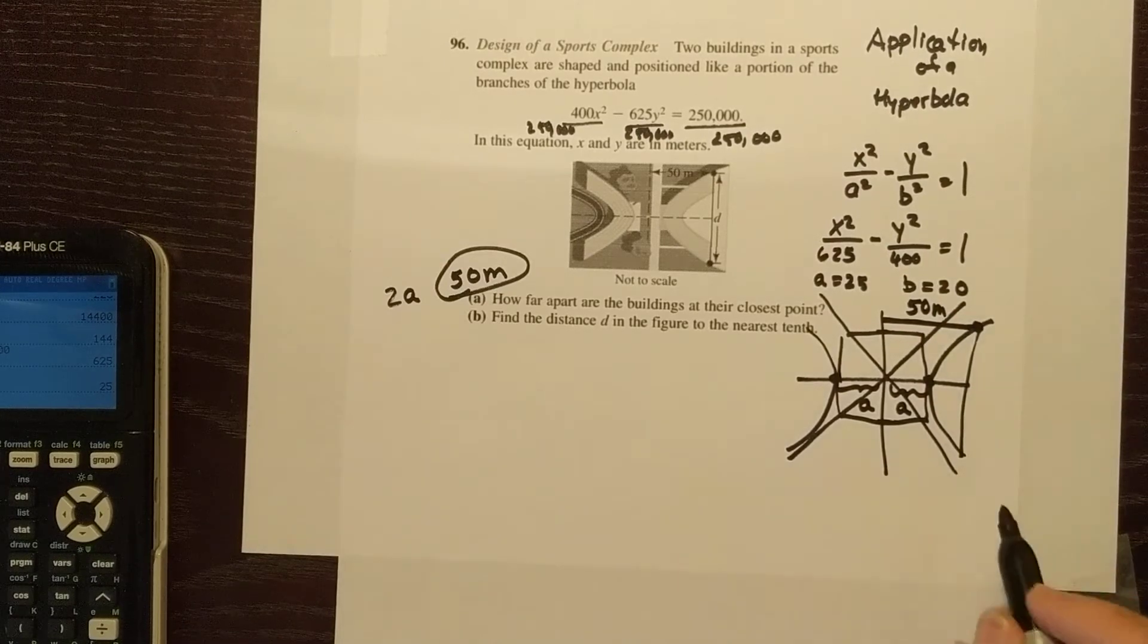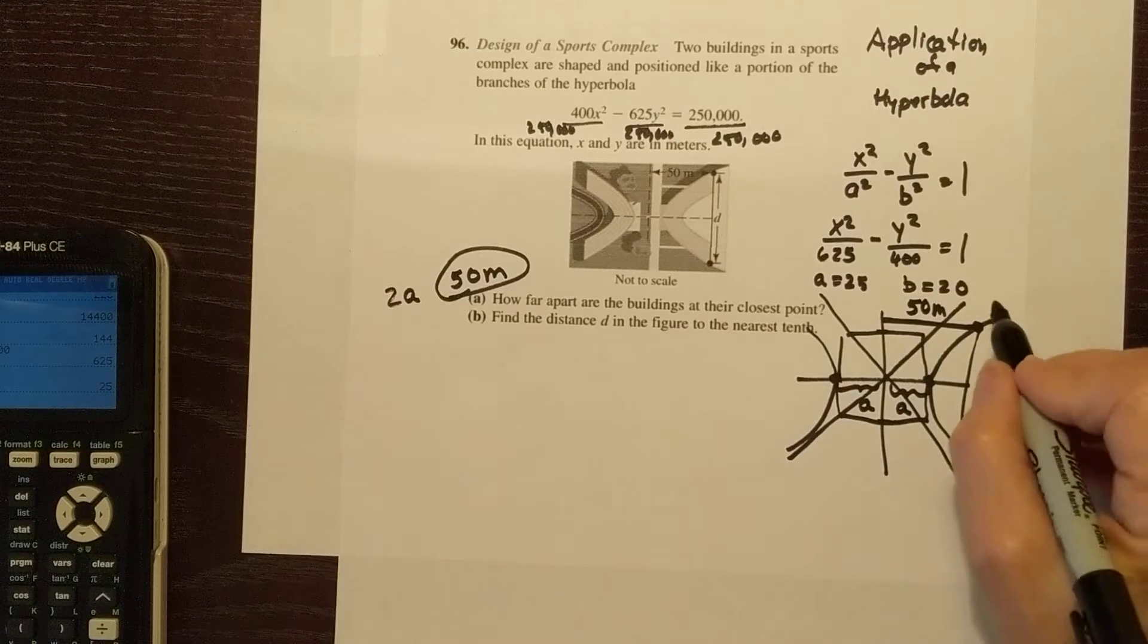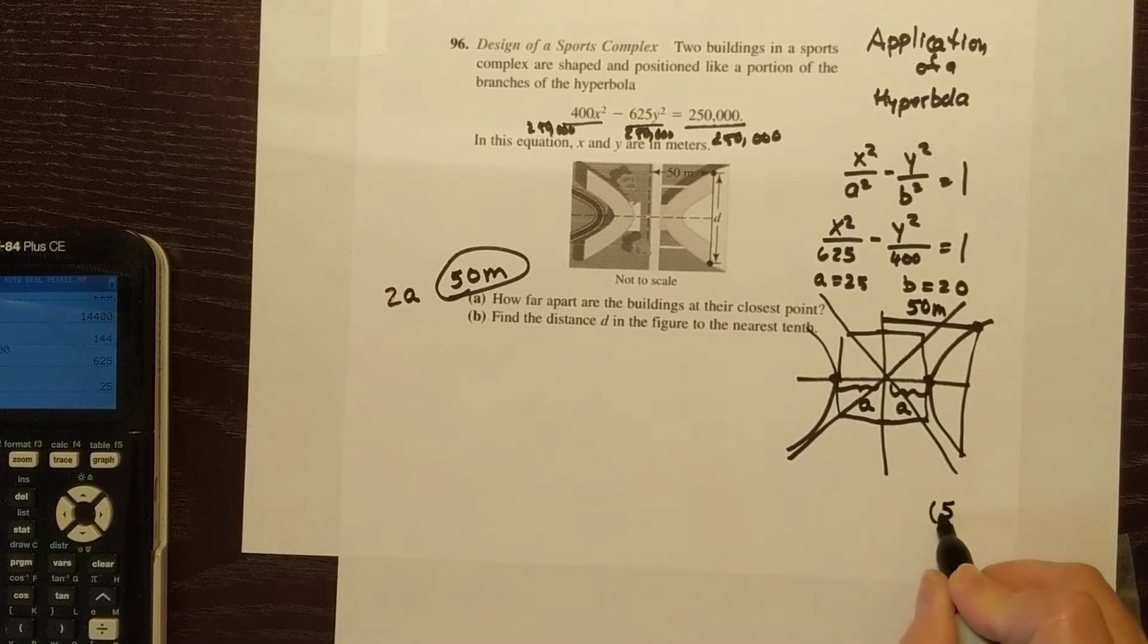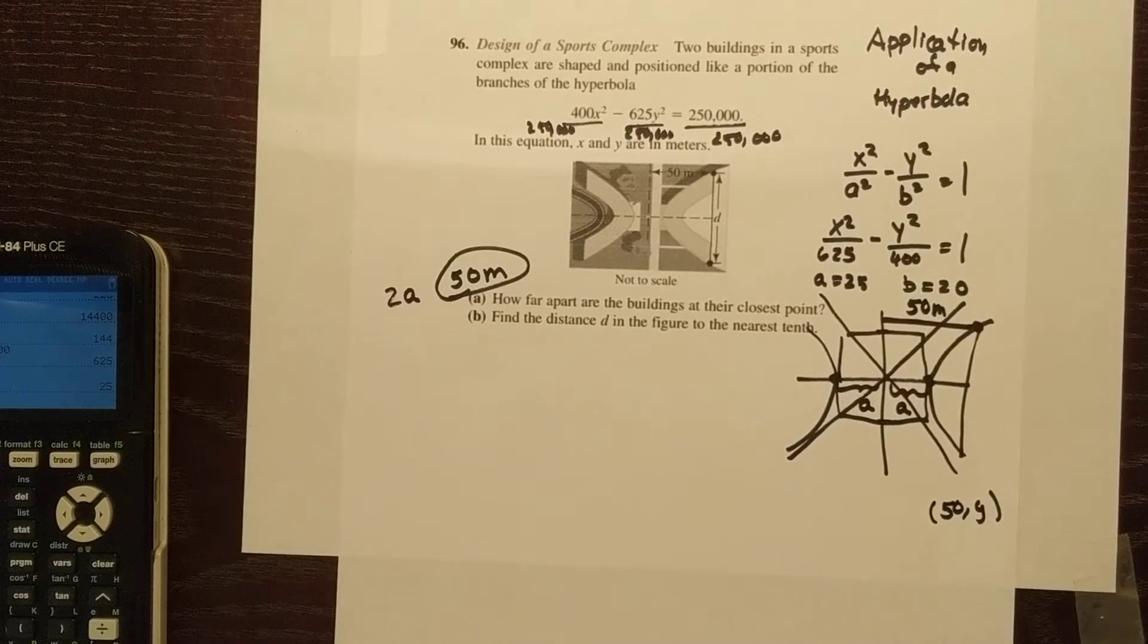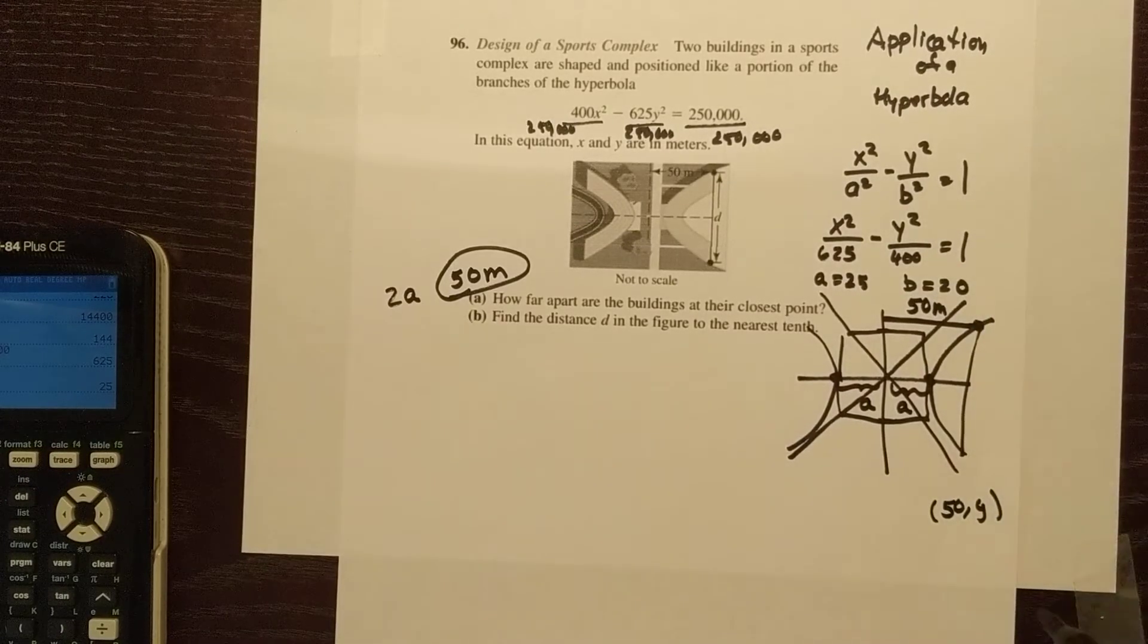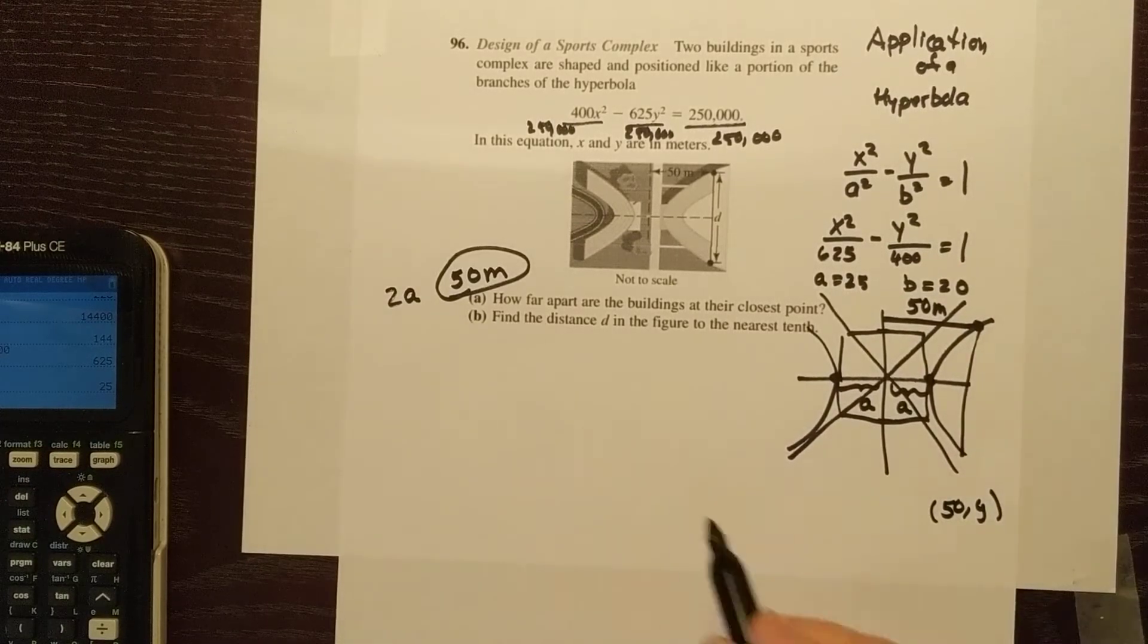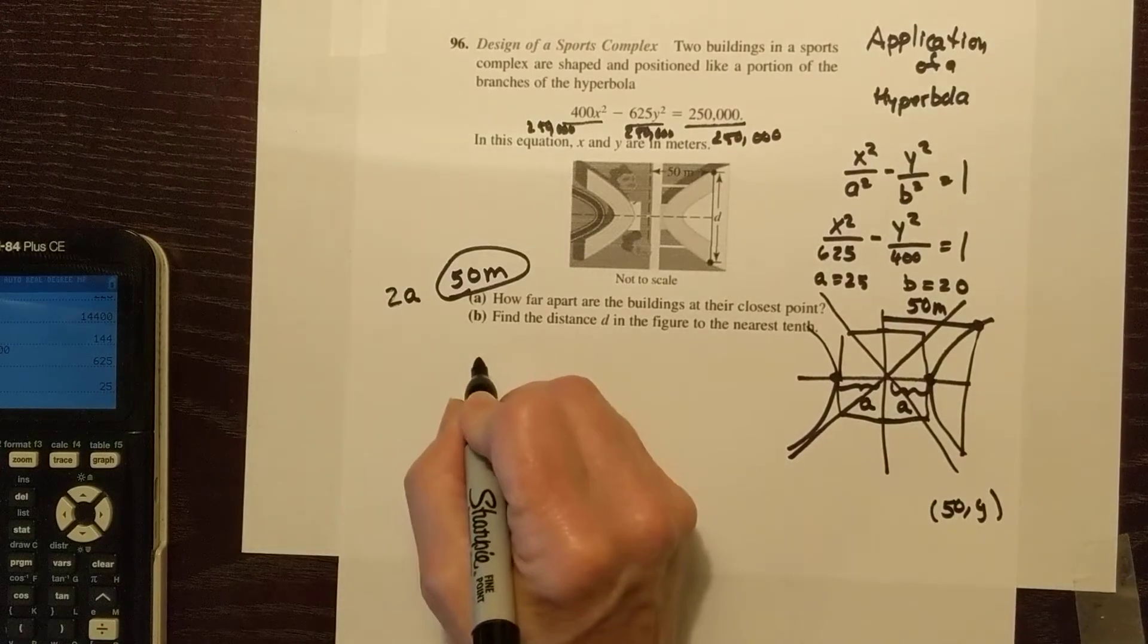So if I have this point on my parabola, x would be 50 and we don't know what y is. So we have an equation and we can plug in all those numbers and solve for y. So let's do that. Let's see, 50 squared.